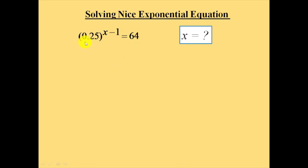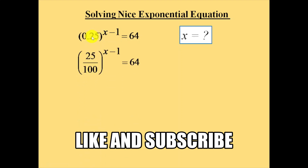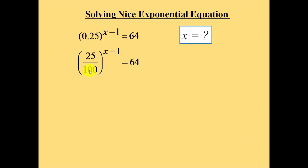From this equation, write 0.25 as 25 by 100. Multiplying 0.25 by 100 gives 25, and the same 100 is in the denominator, so 0.25 is written as 25 by 100. Now 25 over 100 simplifies to 1 by 4, so the equation becomes 1 by 4 to the power of (x minus 1).